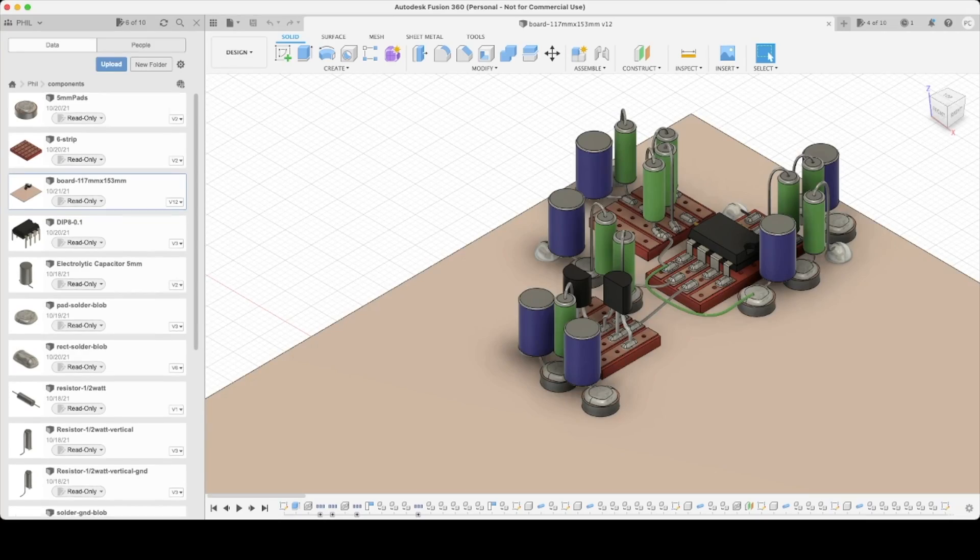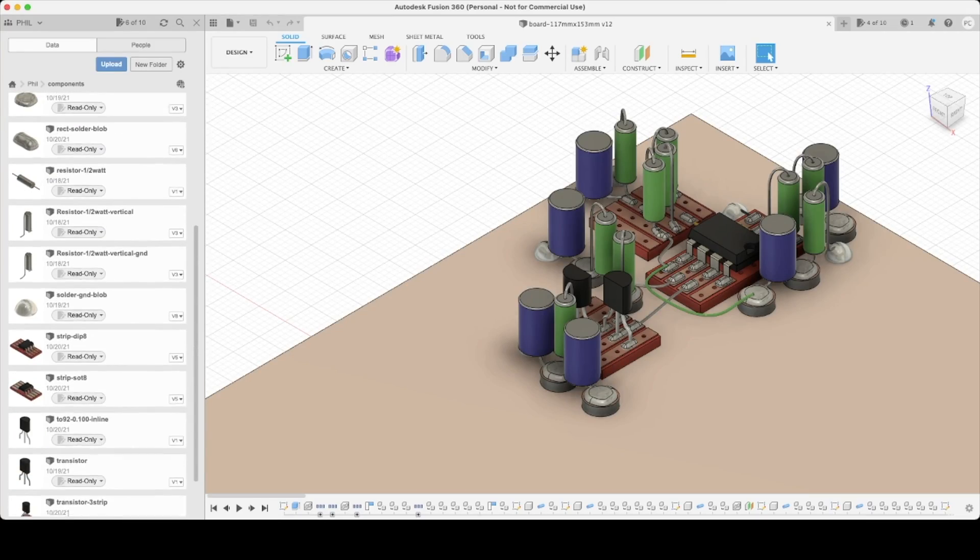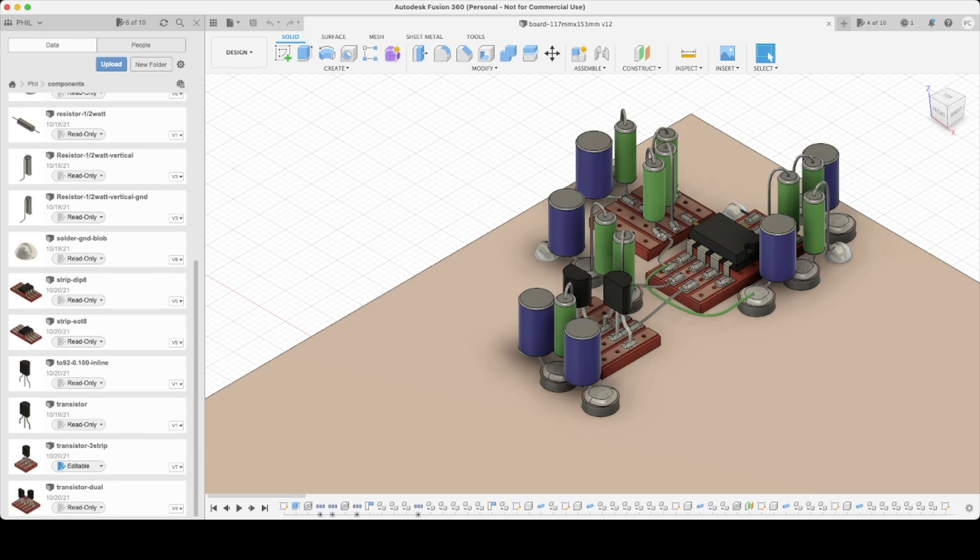I have these pads and strips, as well as various components, modeled in Autodesk Fusion 360, where I can arrange the parts beforehand to optimize a layout when doing this Manhattan style construction.